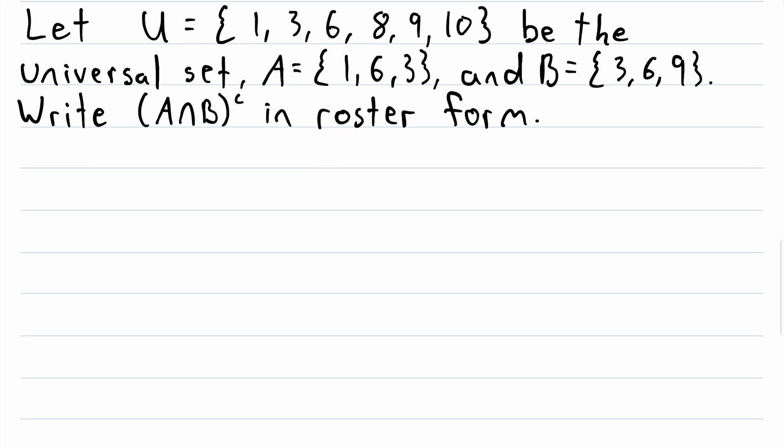Let U equal the set containing 1, 3, 6, 8, 9, and 10, and we're letting this be the universal set. Let A be the set containing 1, 6, and 3, B is the set containing 3, 6, and 9, and we are asked to write the absolute complement of A intersect B in roster form.